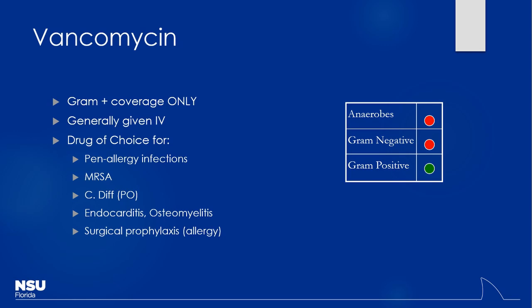When using empiric antibiotics, vancomycin is included if you're worried about MRSA — maybe a skin infection or a healthcare-associated disease. When cultures come back and show MRSA is not present, you scale back. This drug is used very frequently for empiric coverage, and then when cultures return, you can de-escalate unless MRSA is confirmed.